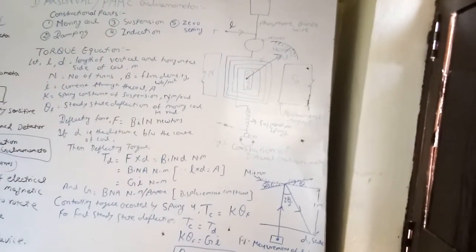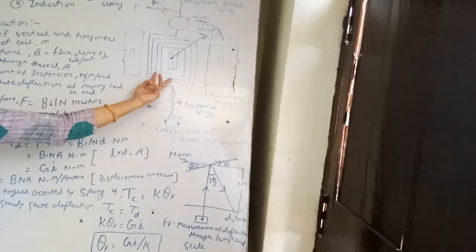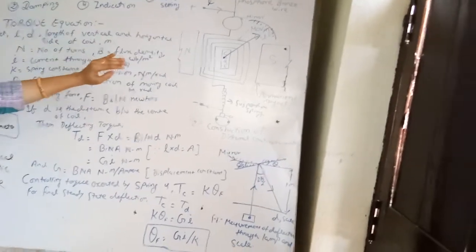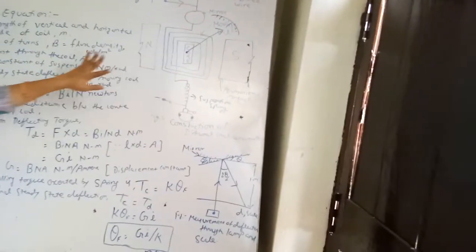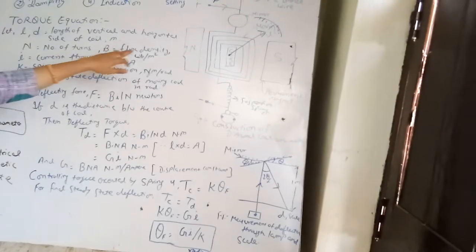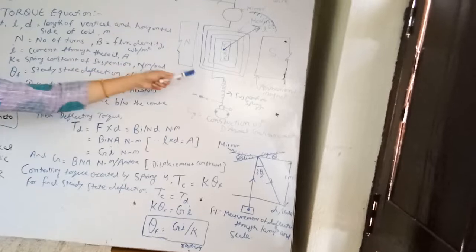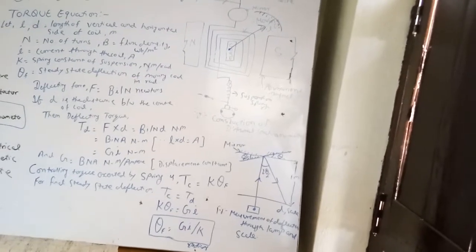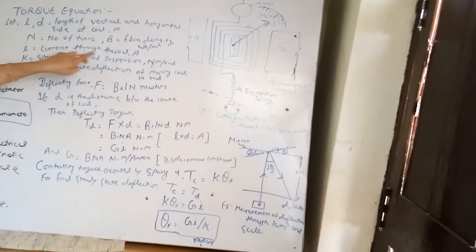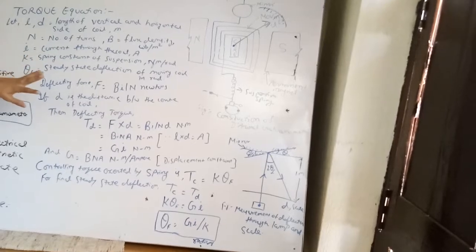Now come to the torque equation. Suppose the length of the coil is L and the width of the coil is D, in meters. N is the number of turns wound on the core, B is the flux density produced through the current I in the coil, and I is the current through the coil in amperes.